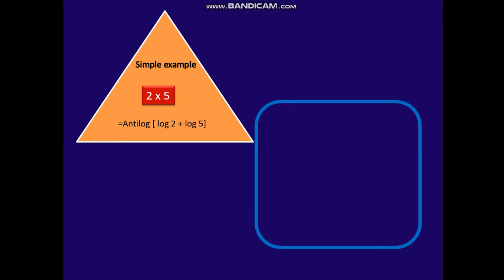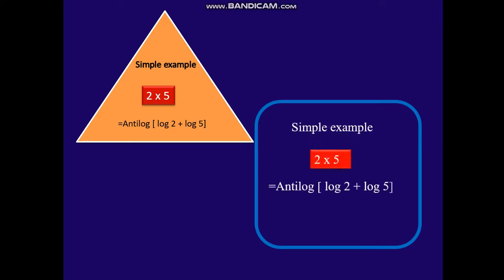Now let us take the simple example: 2 into 5. That is equal to anti-log of log of 2 plus log of 5. That is anti-log of log of 2, which we have found out, is 0.3010, plus log of 5.